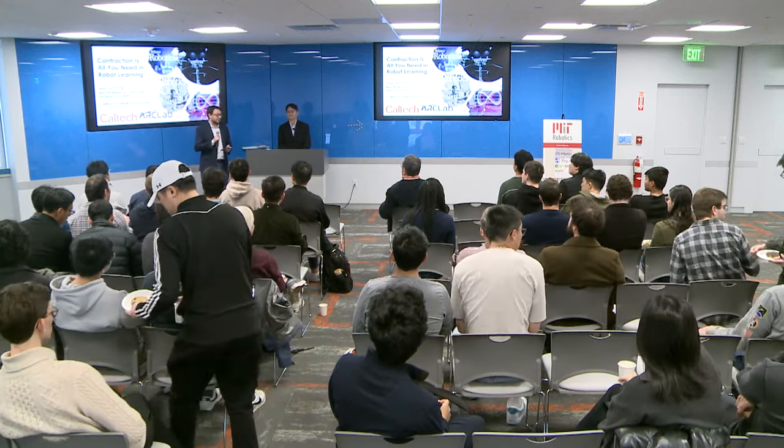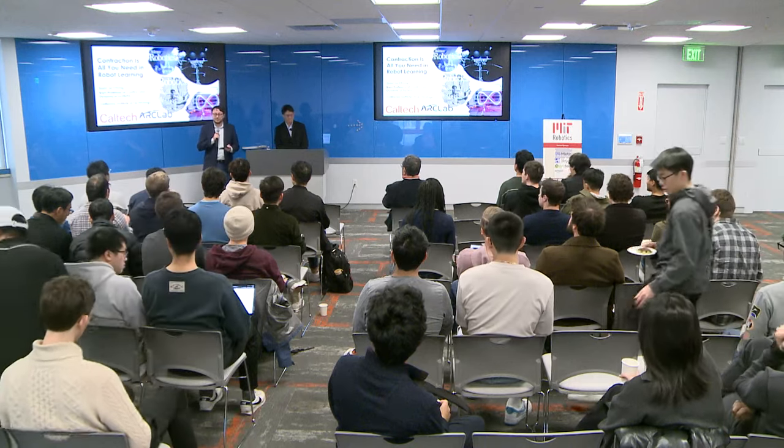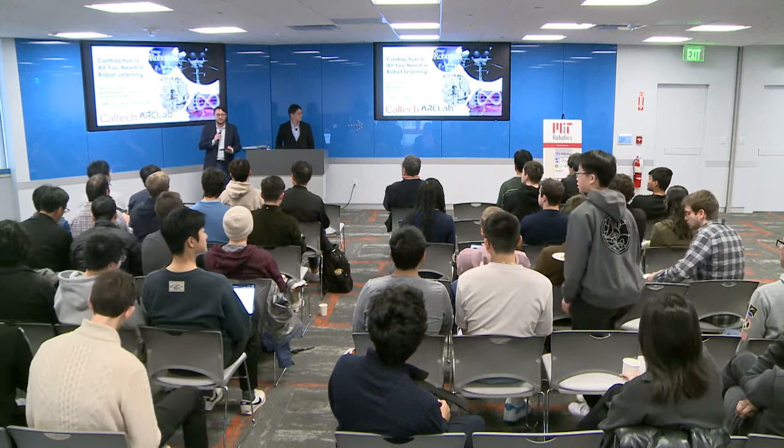Sunjo is the Brand Professor of Control and Dynamical Systems at Caltech, and he's also a senior research scientist at JPL. Sunjo received his master and PhD degree from MIT AeroAstro, not far from us here. And before joining Caltech, he was also a faculty at UIUC.